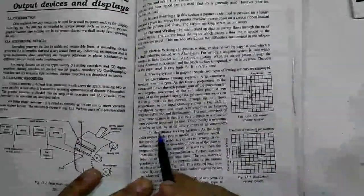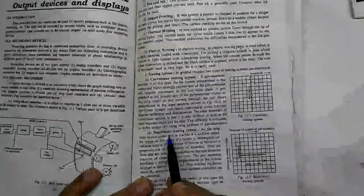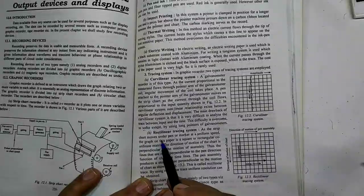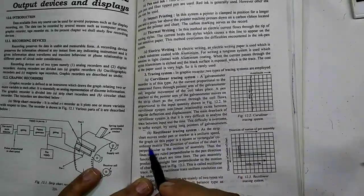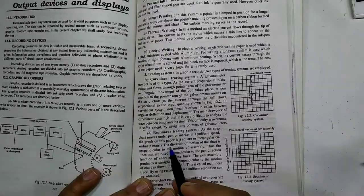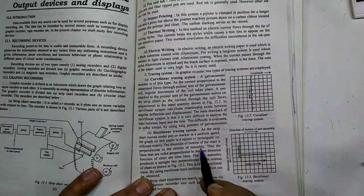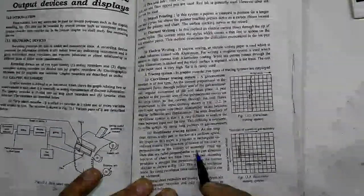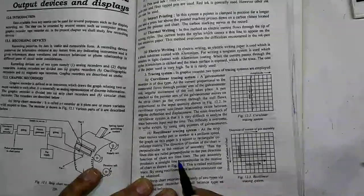Next is rectilinear tracing system. As the strip chart moves under the pen or marker at a uniform speed, the graph on this paper is a square or rectilinear rectangular coordinate matrix. The direction of motion of chart is perpendicular to the motion of assembly. Thus, the lines that are ruled perpendicular to the pen direction function of the chart are timelines.